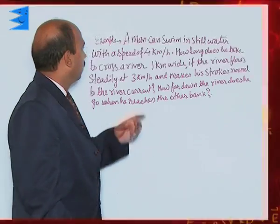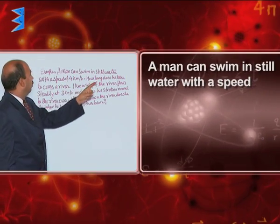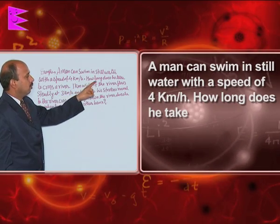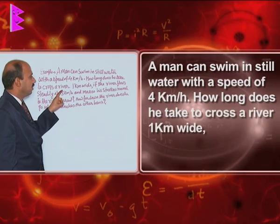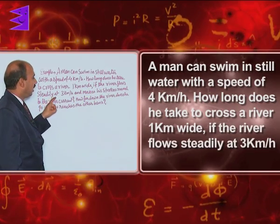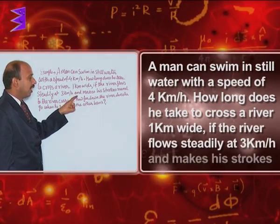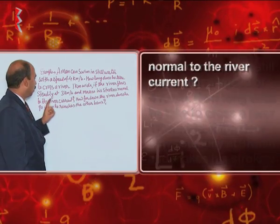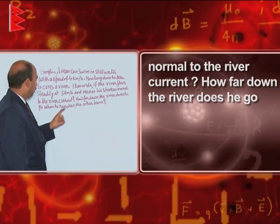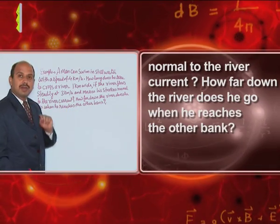See one example related to river. A man can swim in still water with a speed of 4 kilometer per hour. How long does he take to cross a river 1 kilometer wide if the river flows steadily at 3 kilometer per hour and makes his strokes normal to the river current? How far down the river does he go when he reaches the other bank?